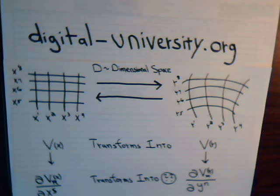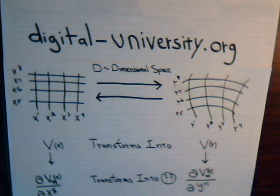In our previous videos, we've talked quite a bit about how vectors and tensors transform from one coordinate system to another coordinate system. In this video, we want to ask the question: if we have a vector in one coordinate system and we take its partial derivatives, do those derivatives form a new type of tensor or a new type of vector?